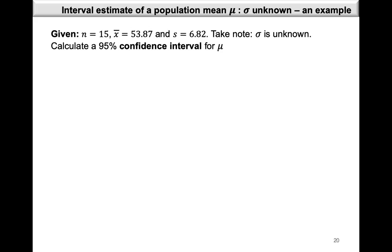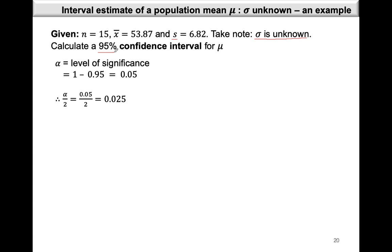Now let's take a look at this example. Given that n is equal to 15, x-bar is 53.87, and the sample standard deviation s is equal to 6.82, let's calculate a 95% confidence interval. Sigma is unknown, which is why we're making use of s. Our confidence coefficient is 0.95, so our level of significance is 1 minus 0.95, which gives us 0.05. This means that alpha over 2 will be 0.025. Our degrees of freedom, needed to read off our t value, is n minus 1, which is 15 minus 1, giving us 14 degrees of freedom.